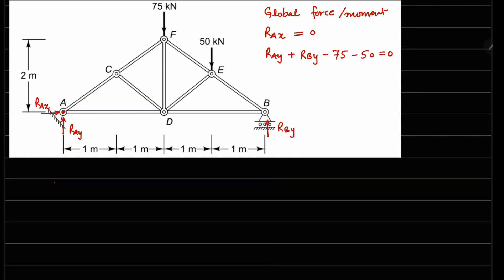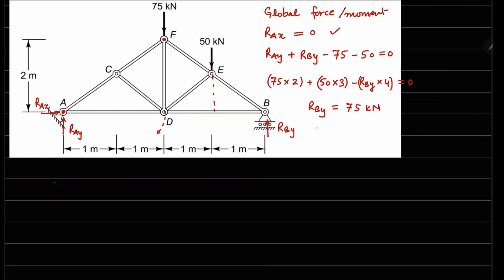Taking moments about point A: the 75 kN force has a moment arm of 2 meters and causes clockwise rotation — that's positive. The 50 kN force has a moment arm of 3 meters, also clockwise. RBy has an anti-clockwise moment with a moment arm of 4 meters. This equals zero. So RAx equals zero. From the moment equation, RBy comes out to be 75 kN, and substituting back into the y-force equation gives RAy equal to 50 kN.